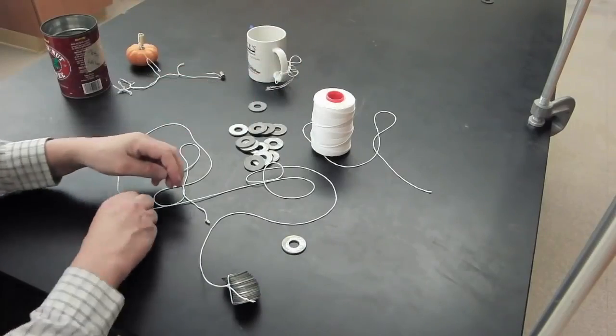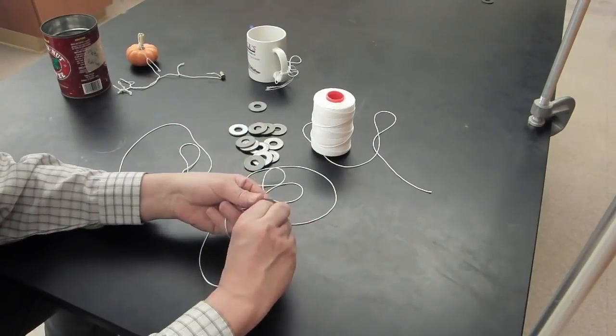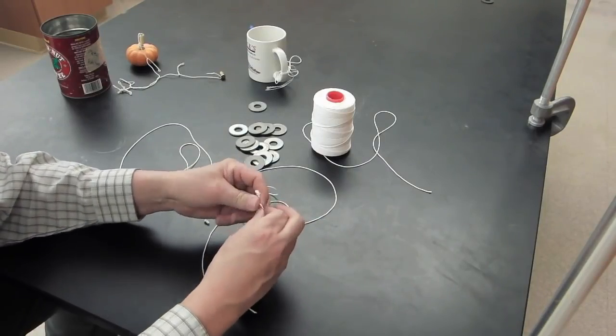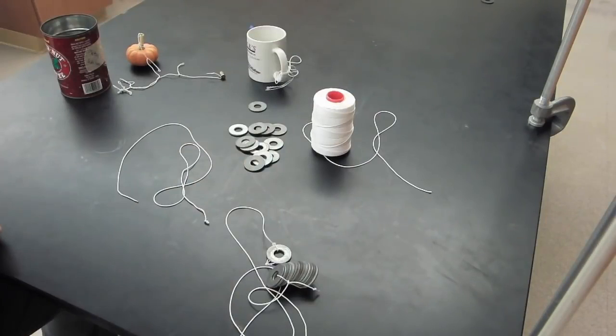This could be a good demonstration for students to investigate. They could use washers or nuts and investigate the ratio of the light weight to the heavy weight. We found a pretty good ratio of about 14 to 1.